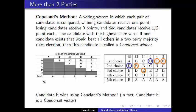Candidate E would be our victor using Copeland's method, and in fact candidate E is what's called a Condorcet winner — a candidate that would have beaten every other candidate in a head-to-head comparison. So candidate E is a very strong candidate. If candidate E were running in a two-party election with any one of these other candidates, candidate E would win that election.